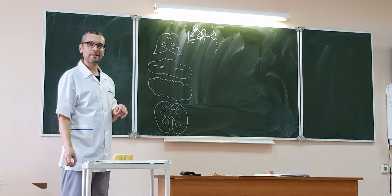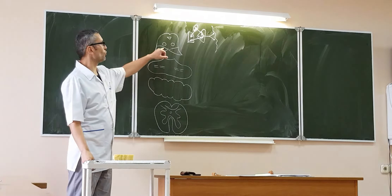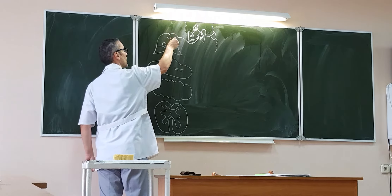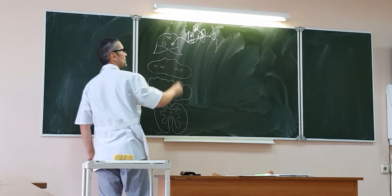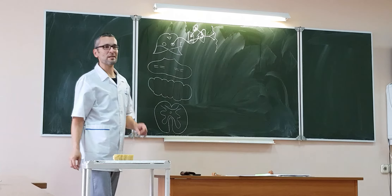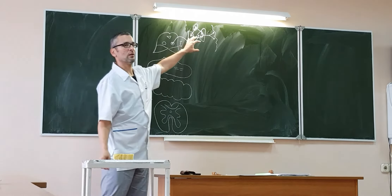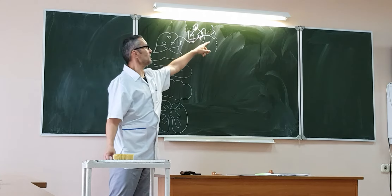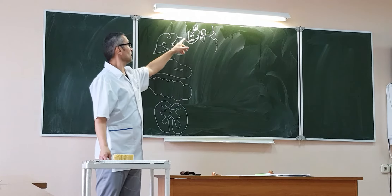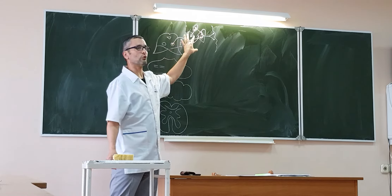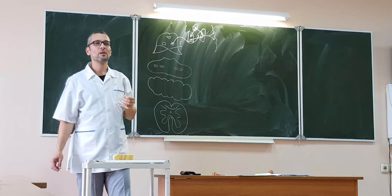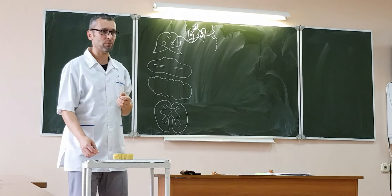Globus pallidus sends this nerve impulse to the nucleus ruber, and the impulse comes to the nucleus ruber and is interrupted here. Nucleus ruber is the body of the first neuron for this tract — not for tractus corticospinalis, which is the pyramidal tract. With the help of these two-way connections, the function is to stimulate and activate the extrapyramidal system.